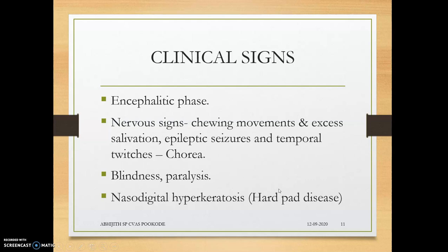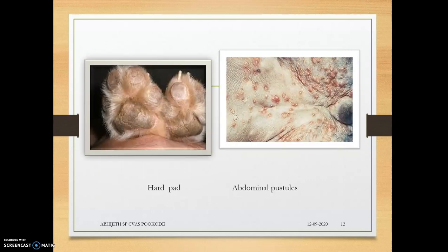Vesicles and pustules appear especially on the skin near the inguinal region and ventral abdomen. In the encephalitic phase, nervous signs include blindness due to optic nerve paralysis, four-limb paralysis, chewing movements, excess salivation, epileptic seizures, temporal twitches (chorea), and naso-digital hyperkeratosis — hyperkeratosis on the nasal and digital regions — known as hard pad disease.